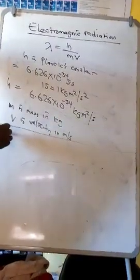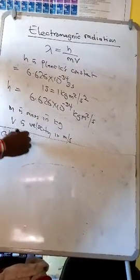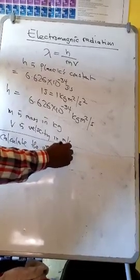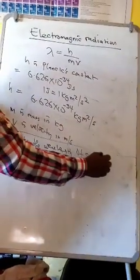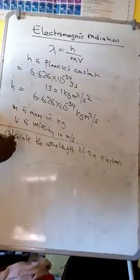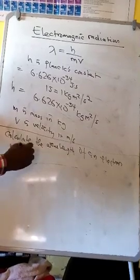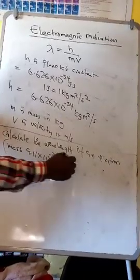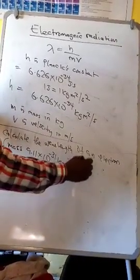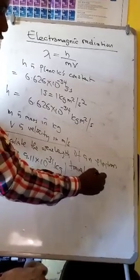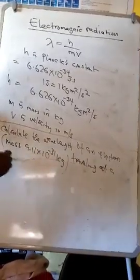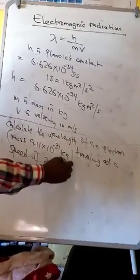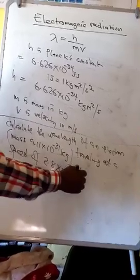Example: Calculate the wavelength of an electron with mass 9.11 times 10 to the minus 31 kg, traveling at a speed of 2.8 times 10 to the power 7 meters per second.